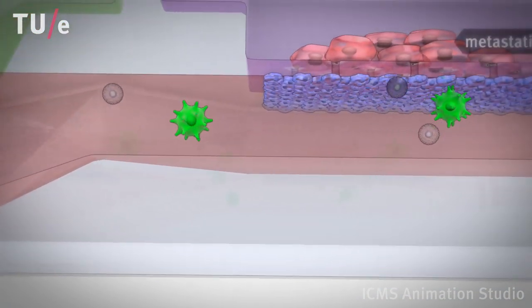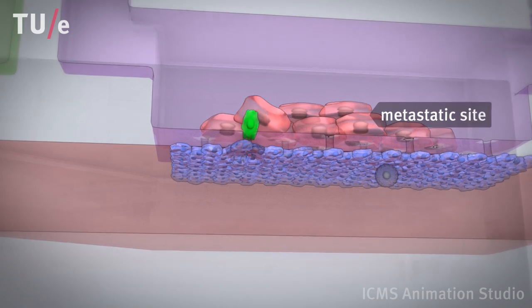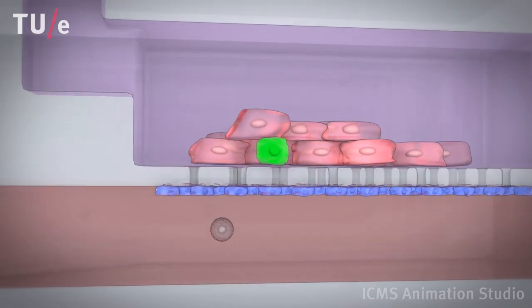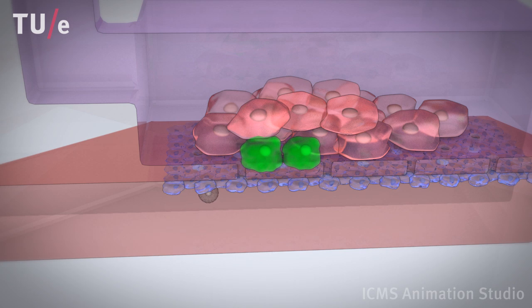Flowing along a potential metastatic site, for example liver tissue, circulating cancer cells may be attracted, leaving the bloodstream and seeding into the tissue where they start to divide and form a metastatic tumor.